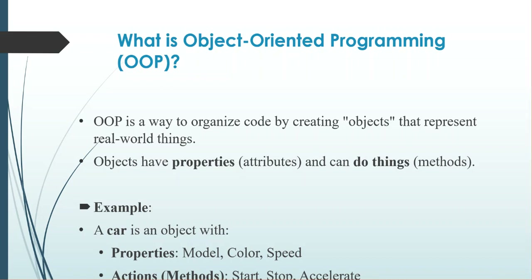Objects have properties and can do things. For example, a car is an object with properties and actions. The properties are the model of the car, the color of the car — it can be white, blue, green, and more — and also the speed of the car. The actions are starting, stopping, and accelerating the car.